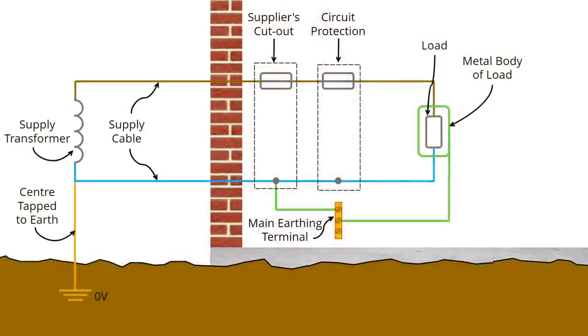Earthing exposed conductive parts is to provide protection against electric shock under fault conditions. So for example, if the line conductor were to come into contact with the metal casing of an appliance, the circuit protective conductor will provide a path for the current to flow to disconnect the protective device within the disconnection time and remove the danger. The requirements for earthing can be found in chapter 54 of BS7671.